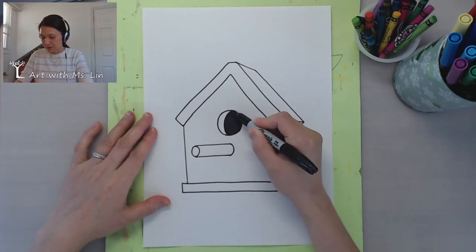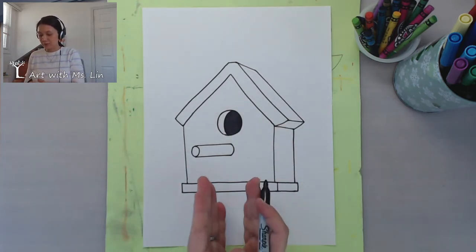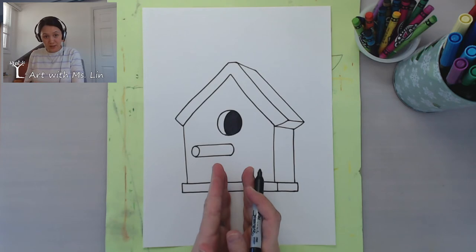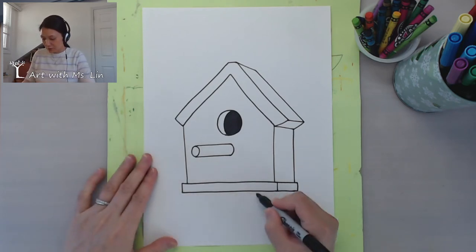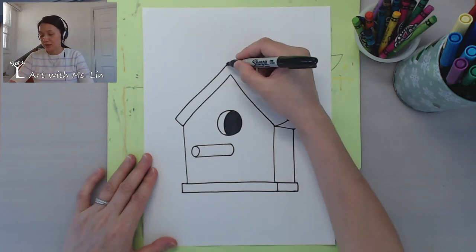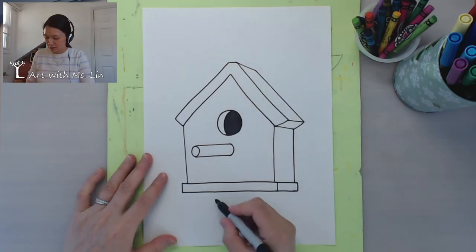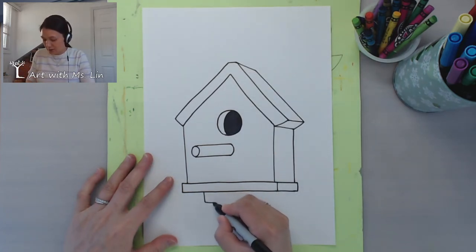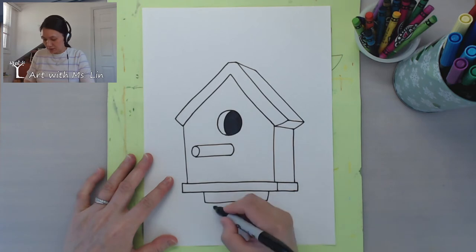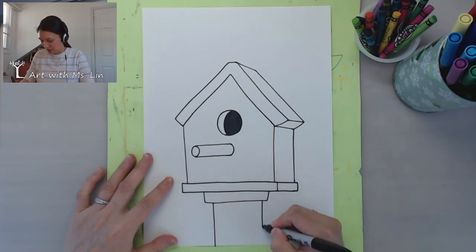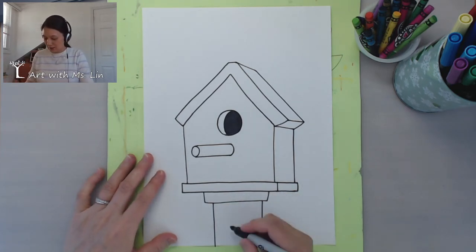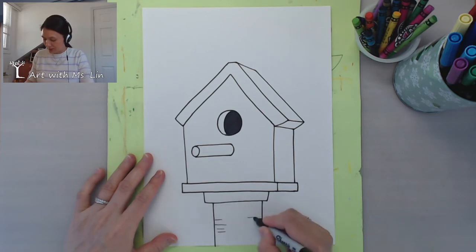The next step is if you want to have the birdhouse standing, you just add a big pole at the bottom holding it up. Or if you want to have it hanging on the tree, then you add the string hanging from like a tree branch. What I'm going to do is the pole like that kind of goes down with this and I could draw some lines to show the wooden texture.